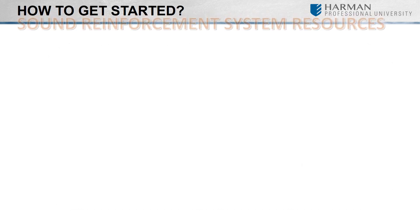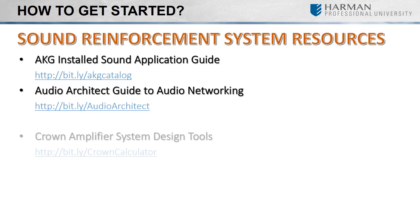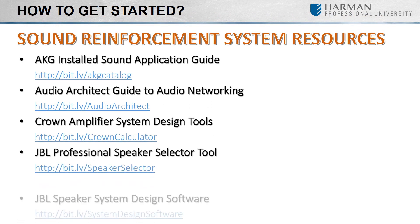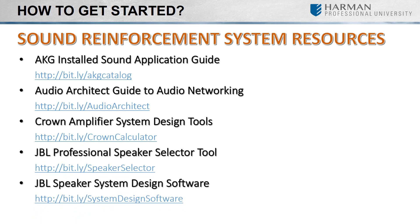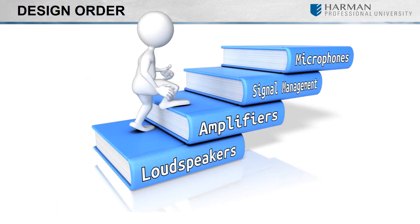There are a number of different resources that you can use. We will be stepping through a few of them in this video and in others as we design our room. The order in which we will design our room will start with loudspeakers, as this is what dictates the amplification power requirements. Next are the amplifiers. Then we'll look at controlling the audio with digital signal processors or mixers. Then finally we'll look at areas that need microphones. We'll also look at other applications such as restaurants, bars, or fitness centers, but let's stick with a simple training room.